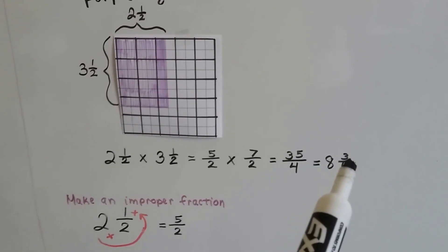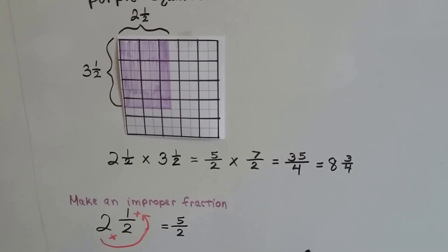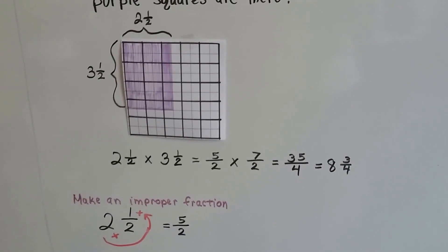We get 35 fourths, which simplifies to eight and three fourths because the four goes into 35 eight times with three left over.